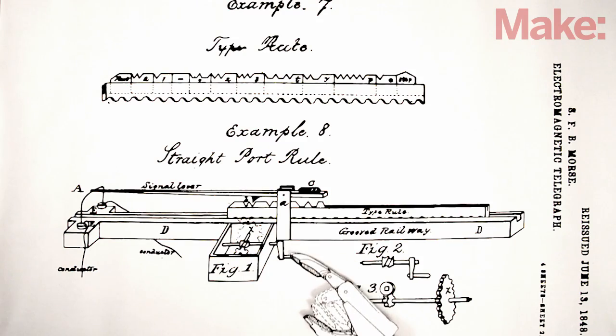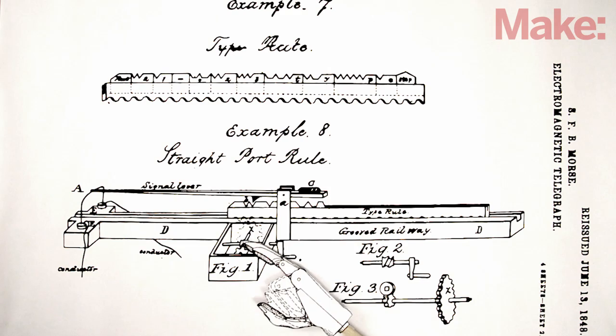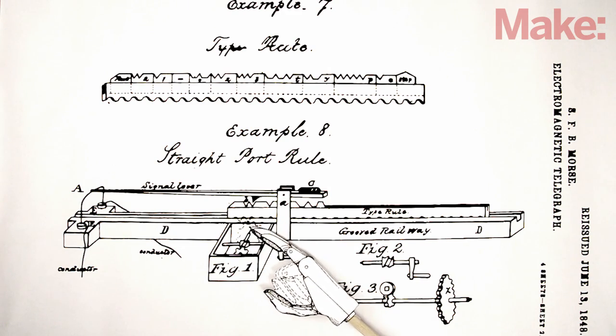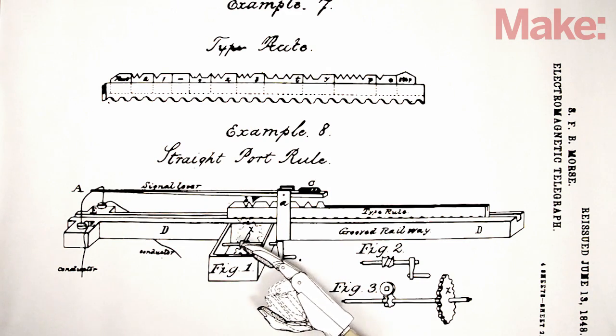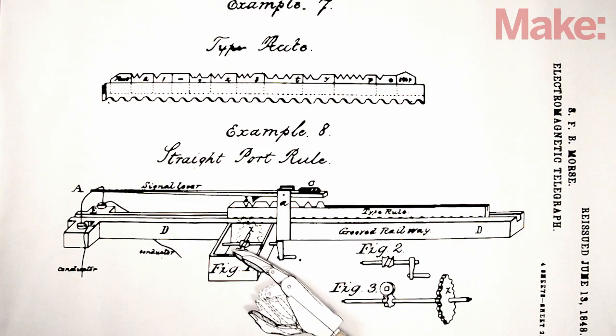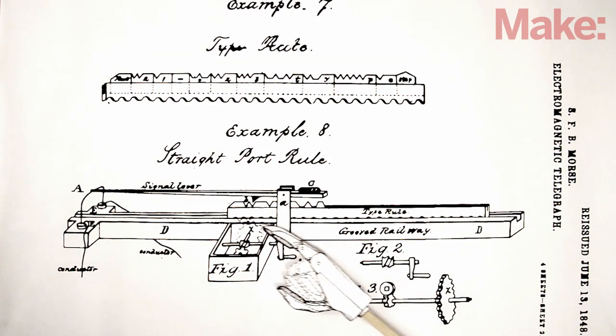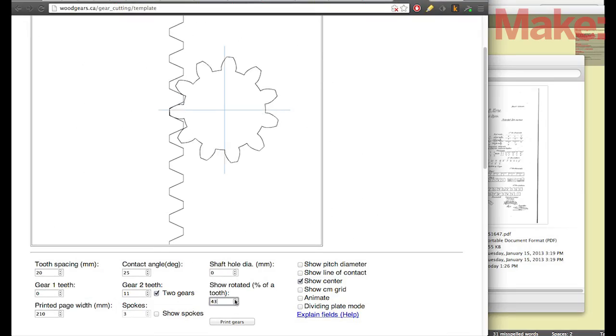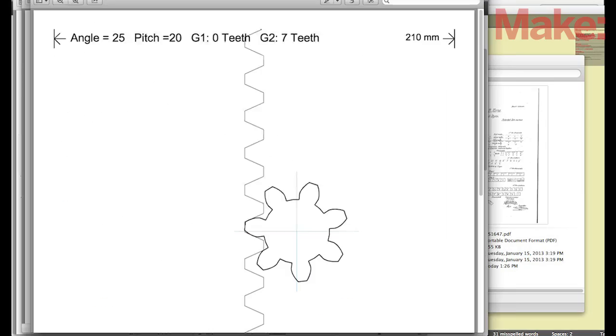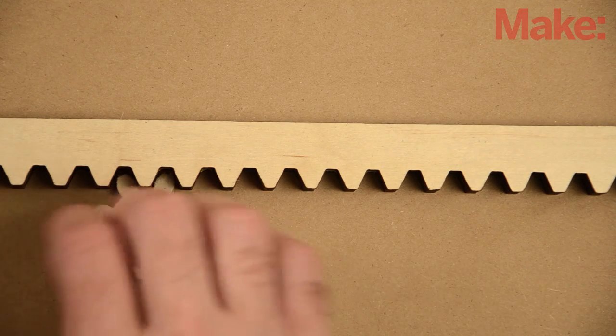When the operator turns a crank, it drives a worm gear that reduces the speed while increasing the power of the crank, helping it travel at a constant speed. This turns a pinion gear, which meshes with the teeth on the bottom of the type rule and moves it forward. I couldn't find a rack and pinion that was the size I wanted, so I used an online gear generator to create a laser-cut pattern.